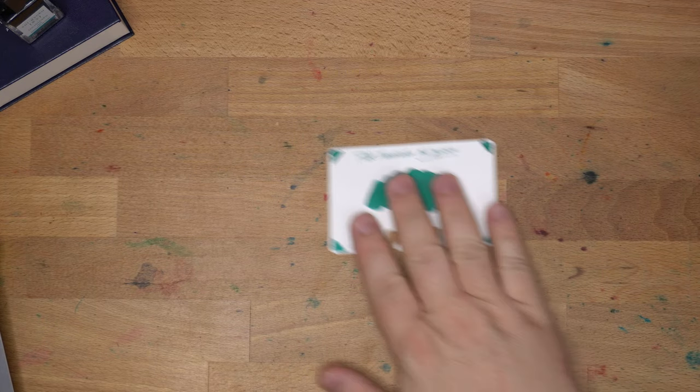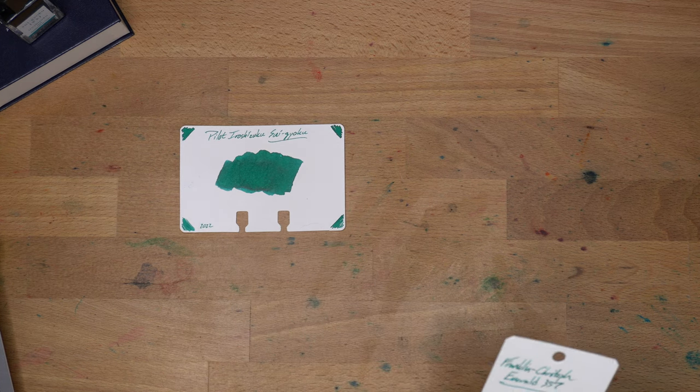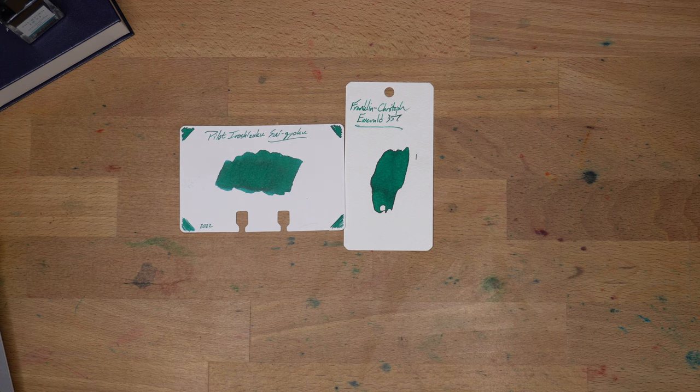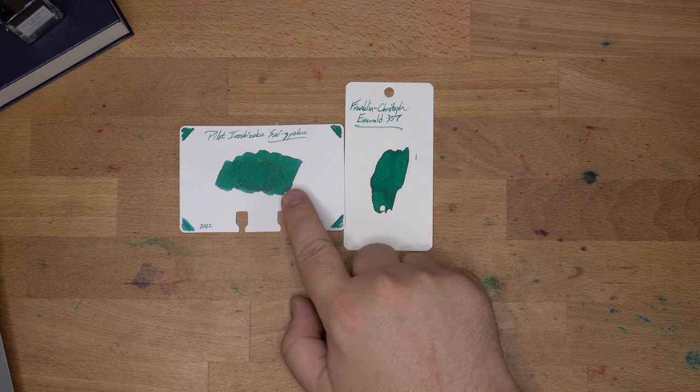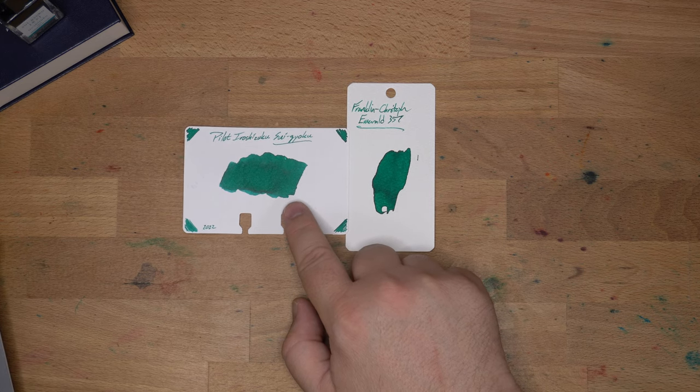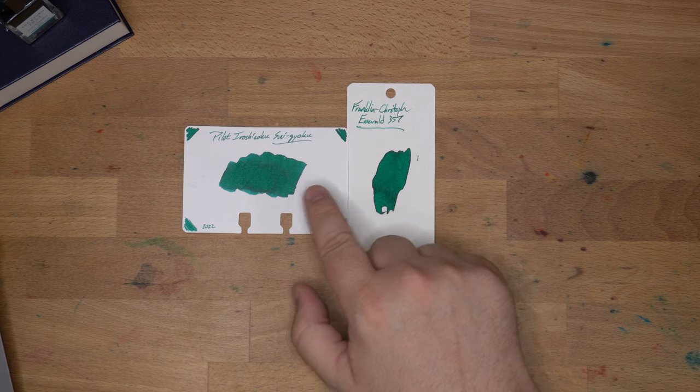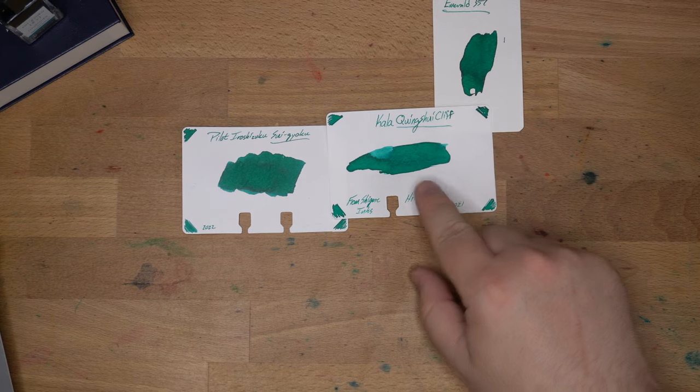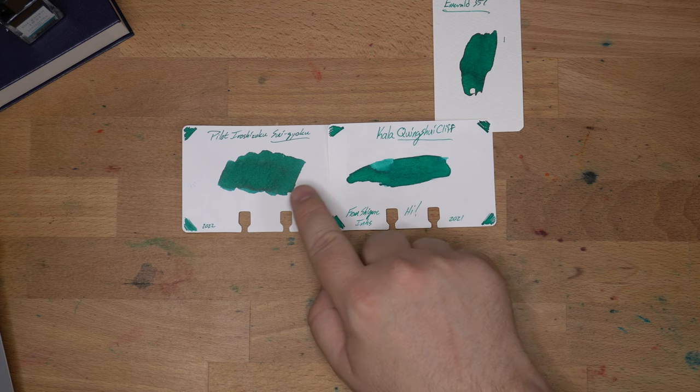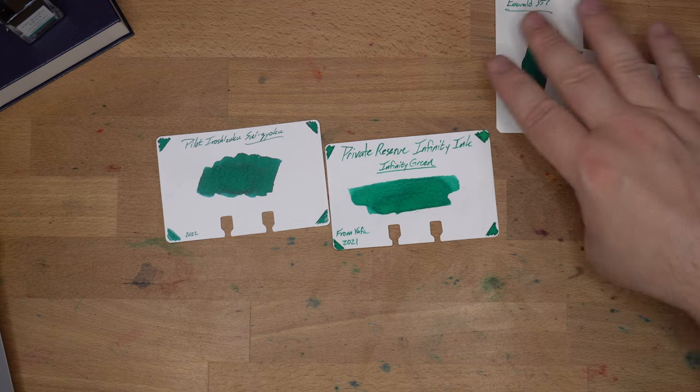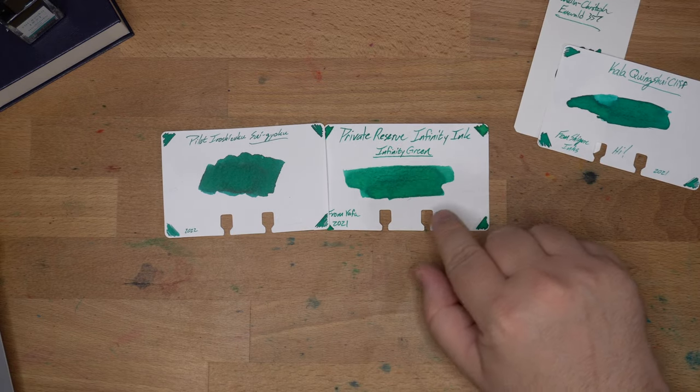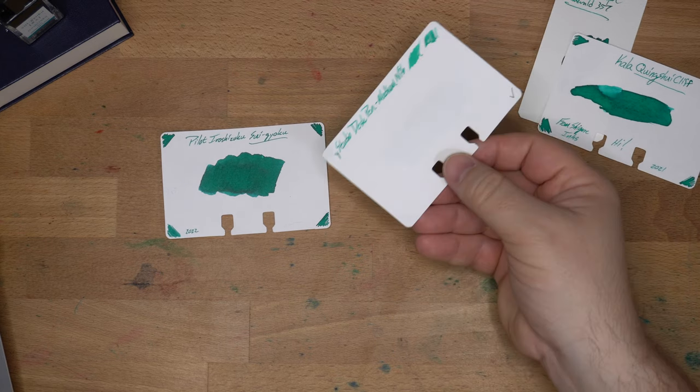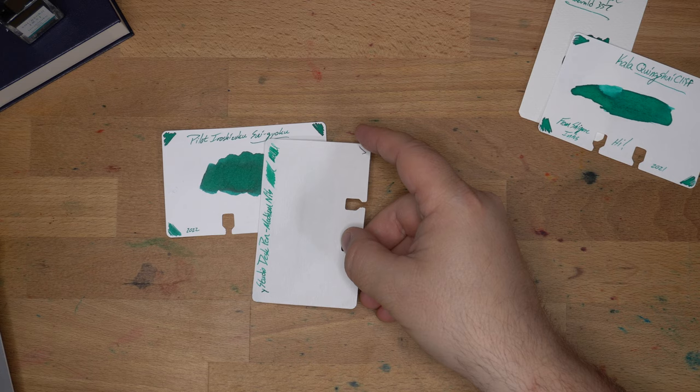Let's look at some similar inks. I have several here because this is an emerald-y color, and emerald is a color that I also really enjoy, so I have a whole lot of emerald-y inks. This is Franklin Kristoff's Emerald 357, which is a really beautiful blue-green emerald-y color. It's actually quite a lot darker than this one in the swatch, but I think when you're writing with it they're fairly similar, although this one's not as wet. Then we've got Kala Queen Shee Cliff, maybe? I know I'm getting that one wrong. This one is a bit on the lighter side than this one, although definitely in the same family. Then we have Private Reserve's Infinity Green, which is listed as a green but it's got a substantial blue component, so you get more green out of it than you would expect.